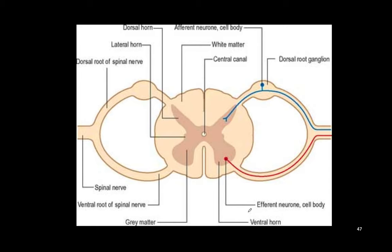To really talk about contralateral versus ipsilateral findings and why things are the way they are, we need to discuss spinal cord tracts and when things decussate — when they travel to the other side.